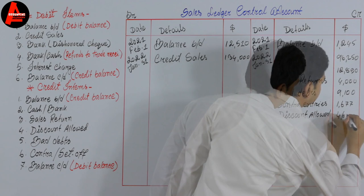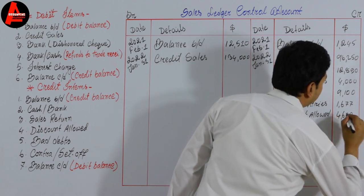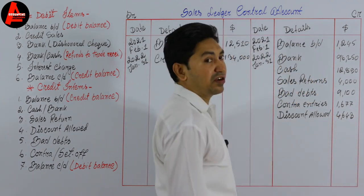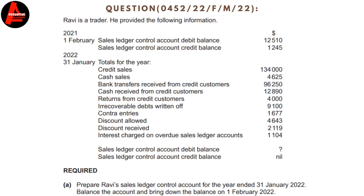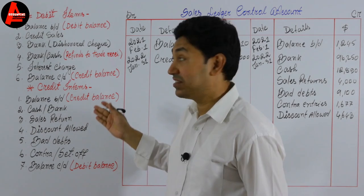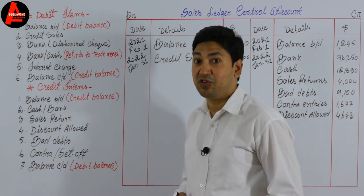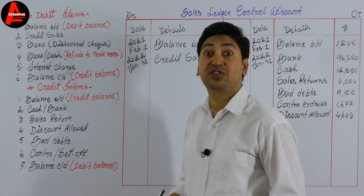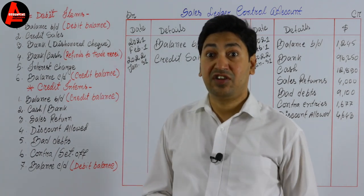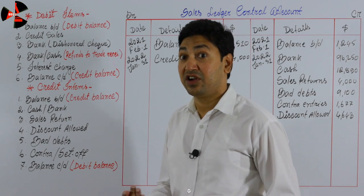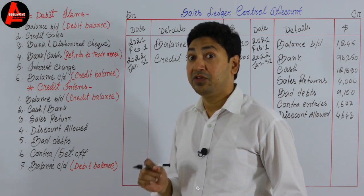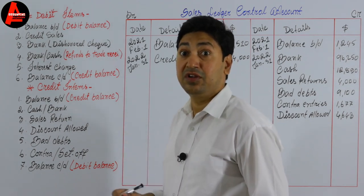The next item is discount received of $2,119. Discount received will not be recorded in this account — it goes to the purchase ledger control account. This item is given in the question just to confuse you. Never take discount received to the sales ledger control account.